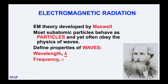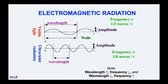Frequency represents how many waves travel by a certain point per second. Frequency gets the symbol nu, which looks like an italicized v. Frequency is literally the number of waves that go by per unit time. There's also node and amplitude, which we'll talk about a little bit, but the wavelength and frequency of a wave are going to be really important to us. Let's look at a diagram which shows better what wavelengths and frequencies are all about.